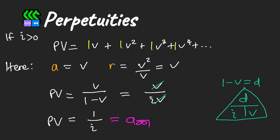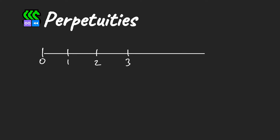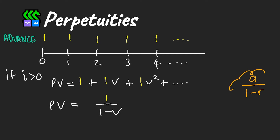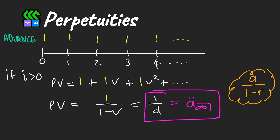We use the notation in pink to denote a perpetuity of cash flows of one paid in arrears forever. For cash flows that are paid in advance, we draw a similar timeline. If our interest rate is positive, we can write the present value as 1 plus v plus v² plus so on, and using the same geometric series formula we get a present value of 1 divided by (1 minus v).